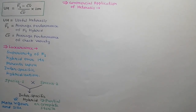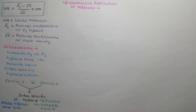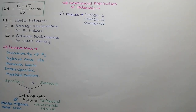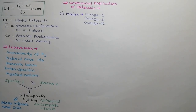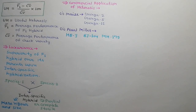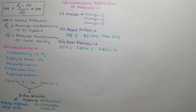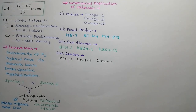Now, what is the commercial application of heterosis? Many varieties in different crops are developed by heterosis breeding. In maize, Ganga 2, Ganga 5, and Ganga 11 are developed by heterosis breeding. In pearl millet, Hb3, Bj104, and MH179 are developed by heterosis breeding. In sunflower, BSH1, KbSH1, and KbSH11 are developed by heterosis breeding. In castor, GCH2, GCH3, and GCH4 are developed by heterosis breeding.